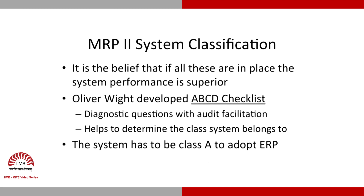Oliver White developed what is popularly known as the ABCD Checklist. This checklist is a set of diagnostic questions with audit facilitation that helps determine which class a system belongs to. Once the class is known, necessary actions can be taken for the system to graduate to a superior class. A system must be Class A to adopt an ERP system.